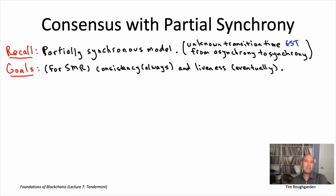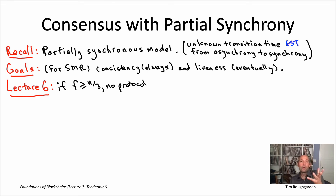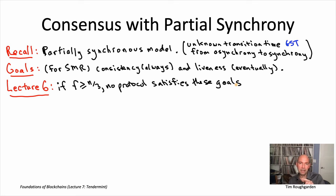One of the key things we learned in Lecture 6 is there's a fundamental limit on when we can actually achieve these goals — consistency always and liveness eventually. Specifically, we showed that if the number of Byzantine nodes is more than a third of the overall total, then no protocol, no matter how clever, is going to be able to satisfy both of these goals.